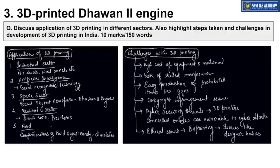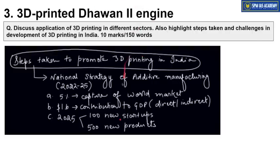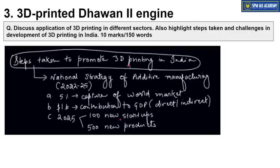3D printers are connected online, which leads to higher probability of cybersecurity threats. Ethical issues also arise — bio-printing is possible, and organs can potentially be made with 3D printing, which may lead to ethical issues like designer babies. To promote 3D printing in India, a policy called the National Strategy for Additive Manufacturing has been launched for 3 years from 2022 to 2025. Its targets: capture 5% of global market by 2025, contribute approximately 1 billion dollars to GDP, create 100 new startups, and produce 500 new 3D printing products in India by 2025.